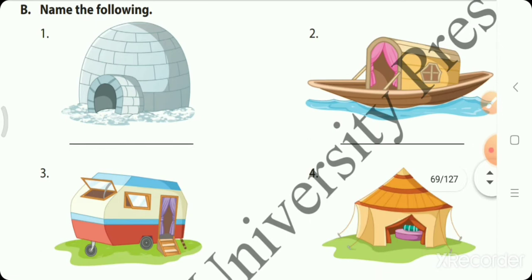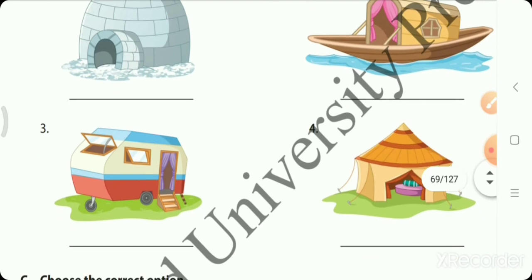Now name the following - identify the house and write their names. First one is igloo, second is houseboat, third is caravan, and fourth one is tent.